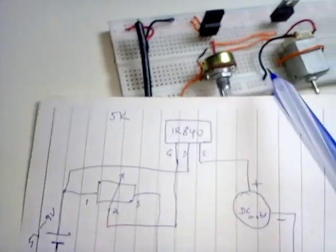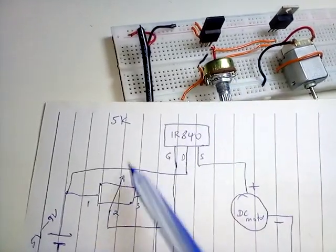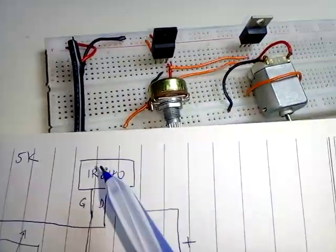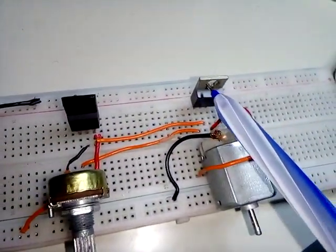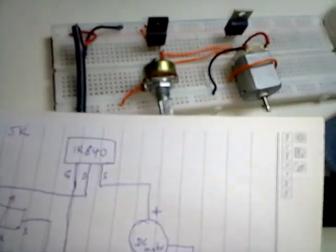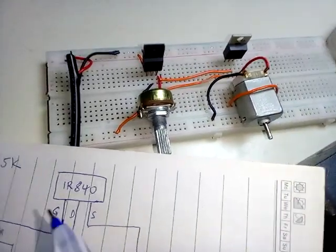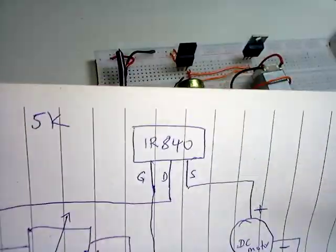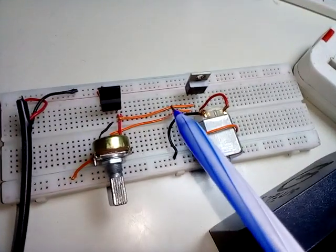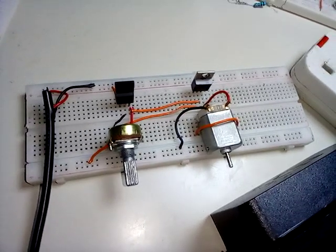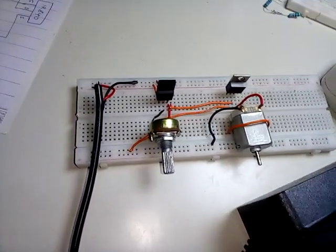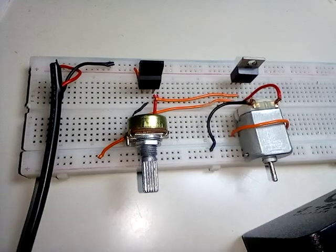The variable resistor in the circuit is this one here, which is 5 kilo-ohms. The IR 840 power MOSFET is this one here, and the DC motor is there. This is the circuit diagram and this is the actual physical design. We are going to test our system to see how we can use a variable resistor to control the speed of the motor.